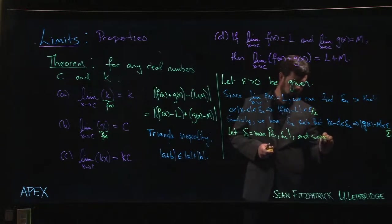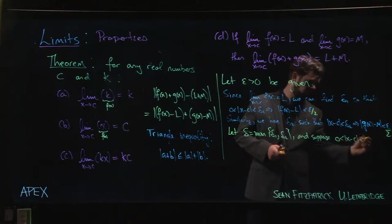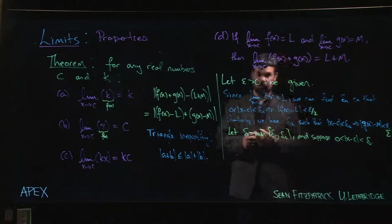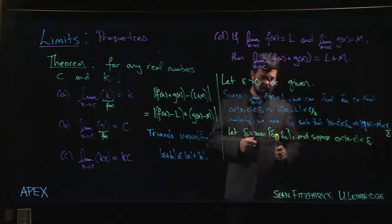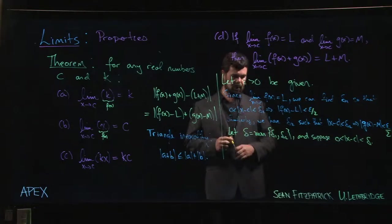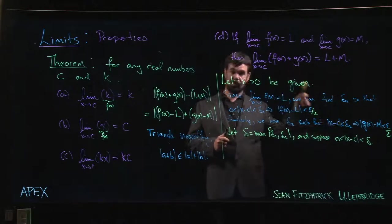And we're going to suppose that the absolute value of |x - c| is less than this delta. Well, since it's less than delta and delta is the smaller of the two, that means |x - c| is less than delta_1 and it's less than delta_2.